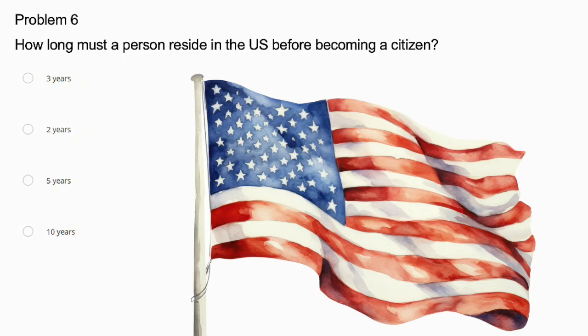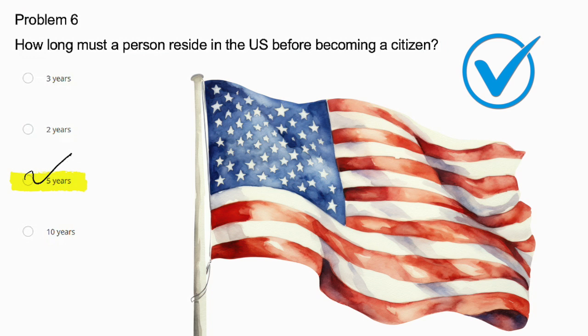Problem number 6. How long must a person reside in the United States before becoming a citizen? Three years, two years, five years, or ten years? A person must reside in the United States for five years before becoming a citizen, because that's the legal requirement. The other options are not correct because three years is only for spouses of US citizens, and two years and ten years are not standard residency periods for citizenship.